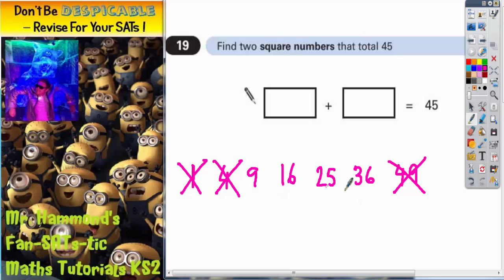Now, if you add these 2 together, that's going to be too big. So, by this point, you should be able, really, to just spot it. And the correct answer is 36 and 9 is going to make 45.